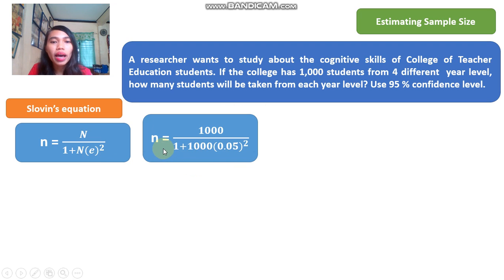And so you will have n equals 1,000 students all over 1 plus 1,000. To solve for e, we use the confidence level, which is 95%. So the e here is 5%, and convert that into decimal, so it becomes 0.05 squared.